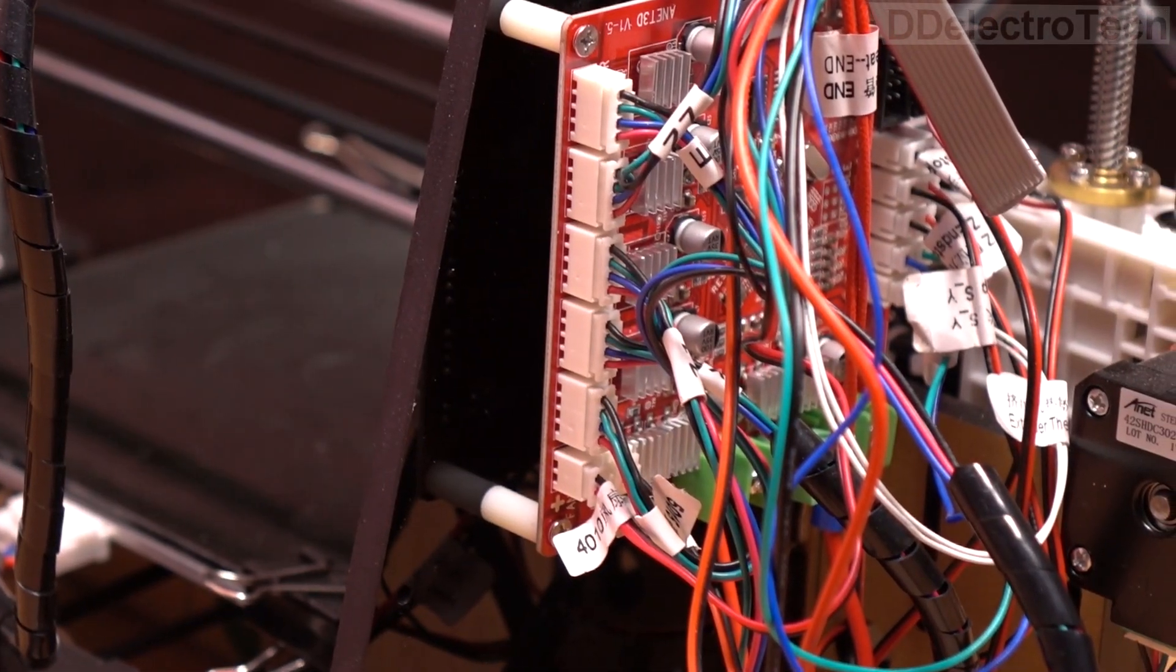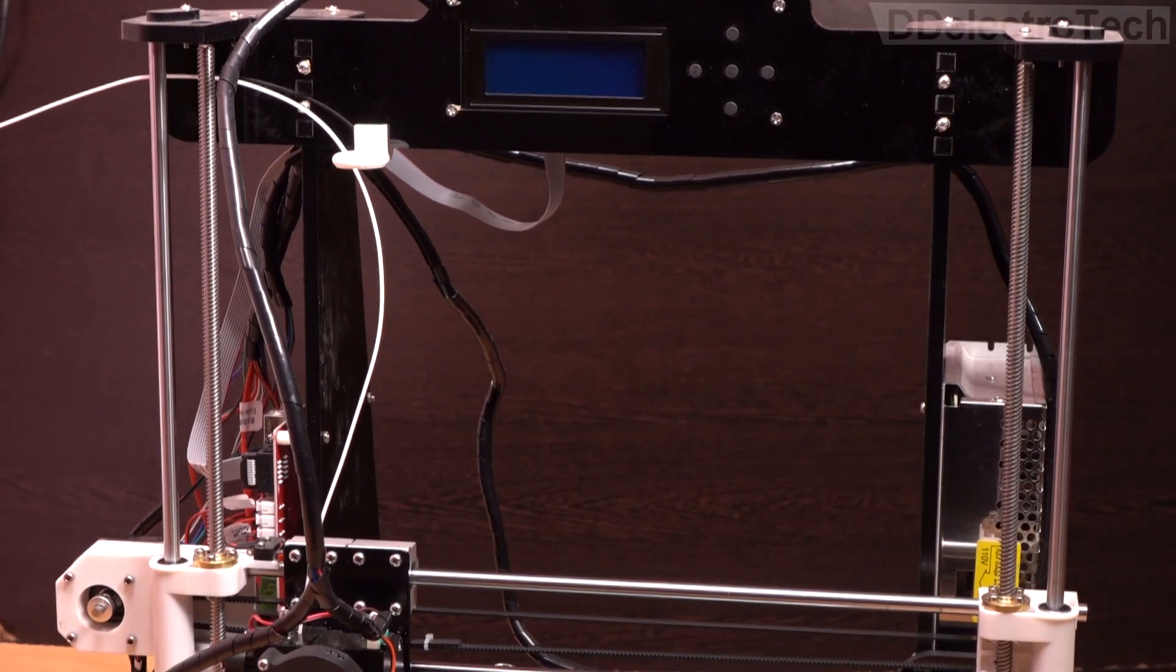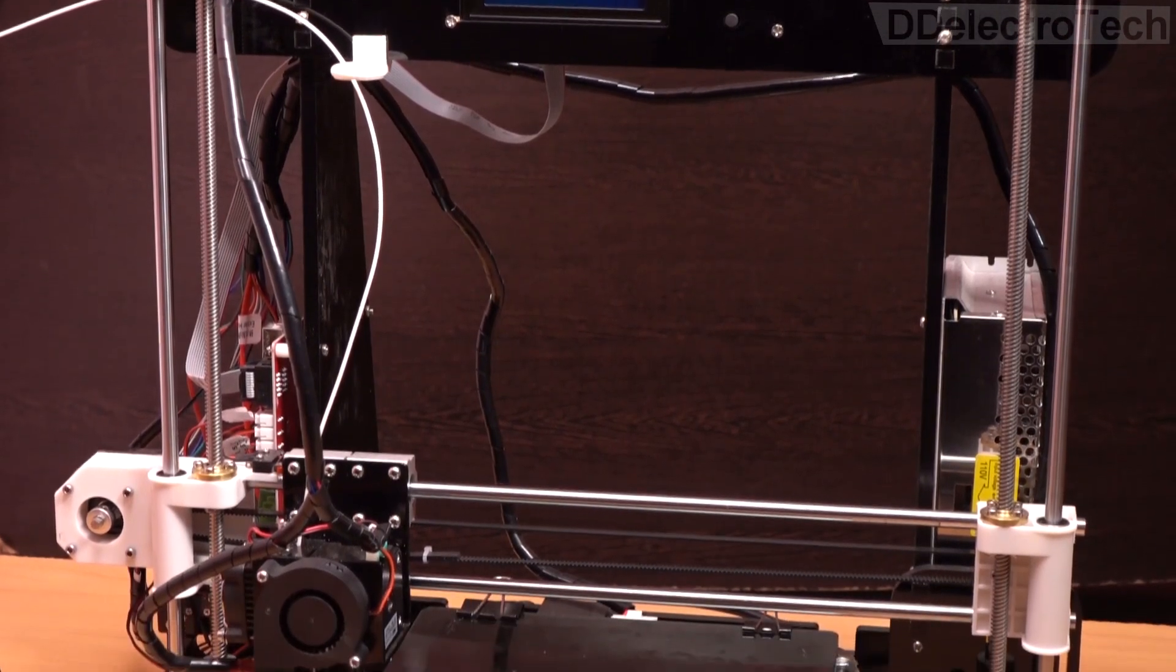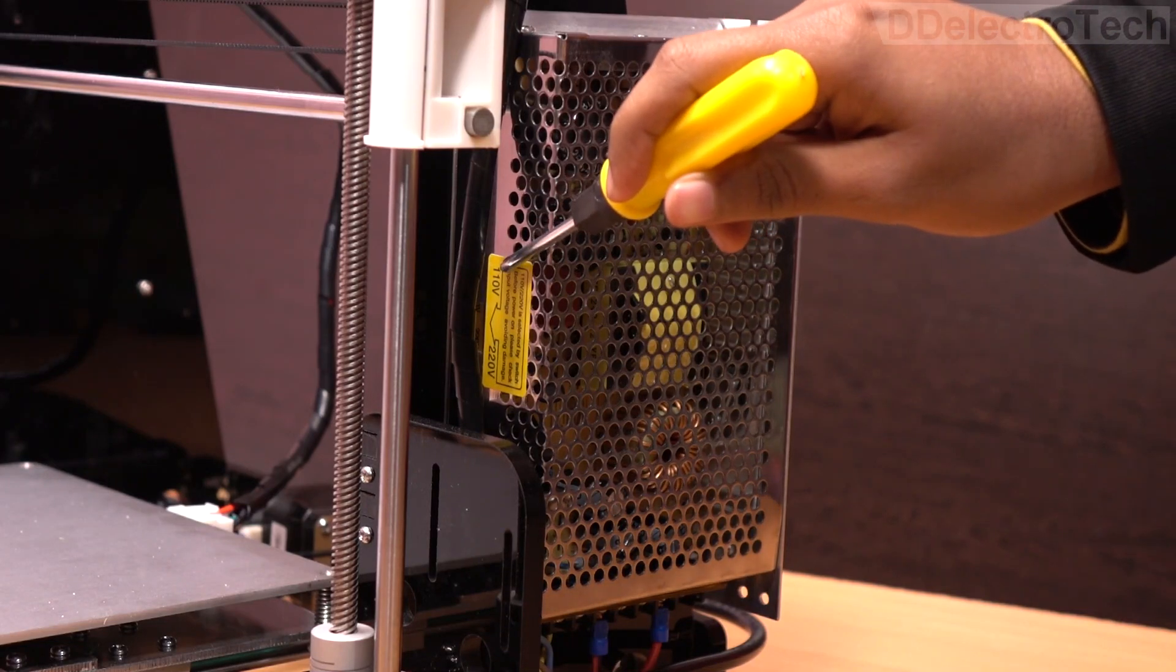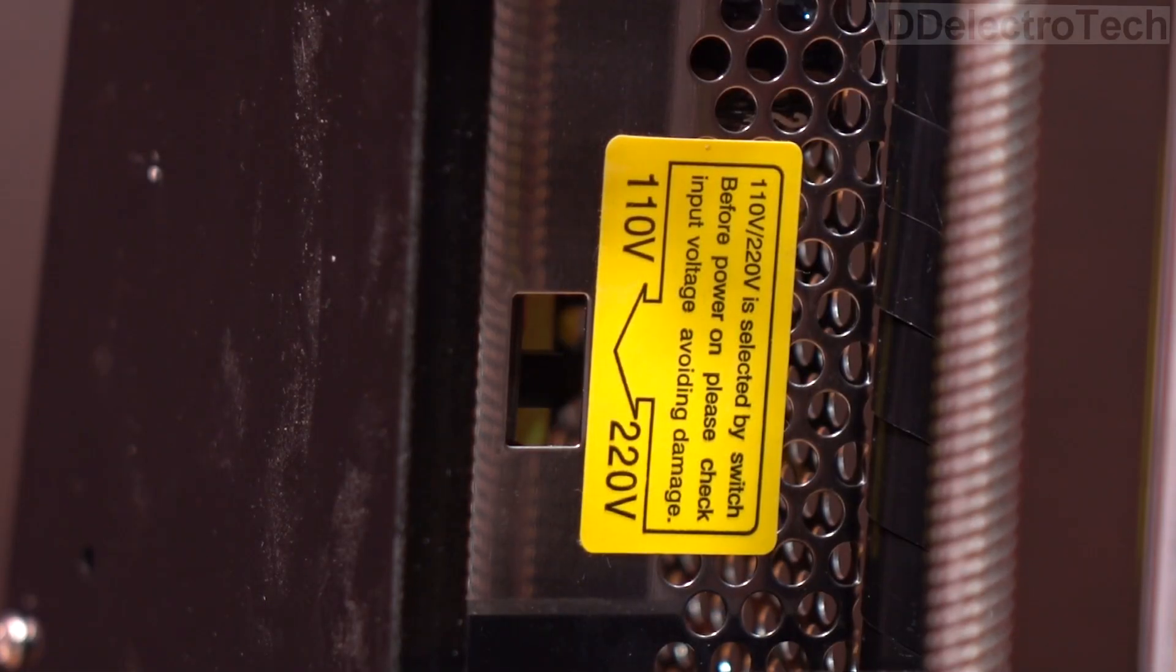Now our assembly is complete. It's time to power it up. But before that, we have to ensure that the selector switch of the power module is set according to the main supply voltage.